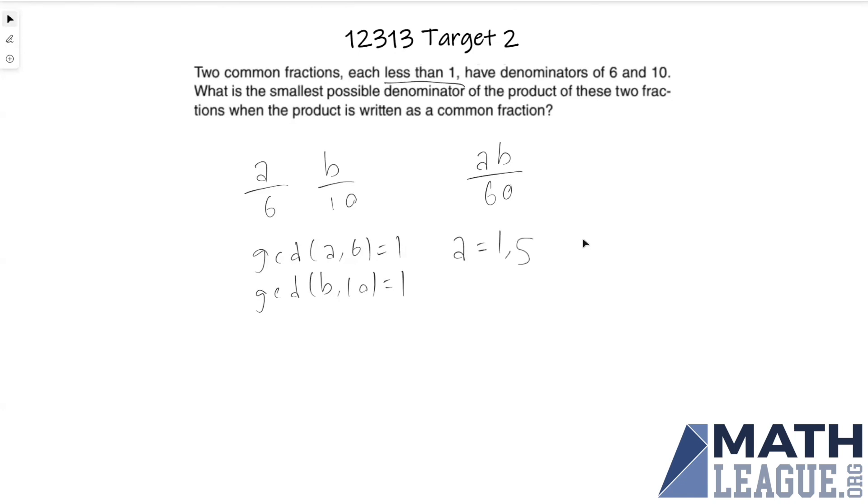And for b we can have one. We cannot have any even number because an even number with ten would give an even number at least two, and it cannot be five either because the greatest common divisor of five and ten would be five. So we can list all the other odd numbers not equal to five: three, seven, and nine will all work as possibilities.